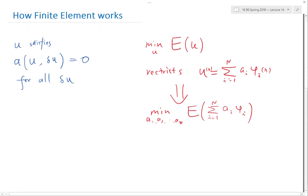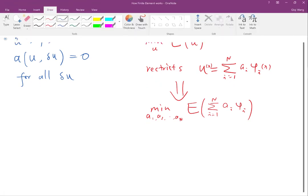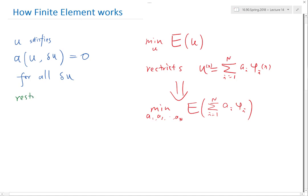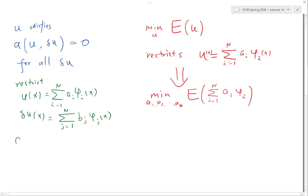So if you do this, then you can also, the next steps are equivalent. So what you do is restrict u of x to be a linear combination of the basis functions. So let me write it as b_j times phi_j of x. And then the equation a of summation a_i phi_i summation b_j phi_j has to be equal to zero for all possible collection of b_j's.